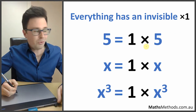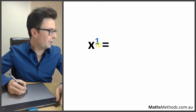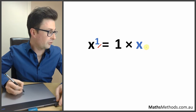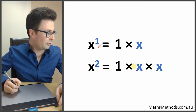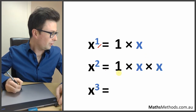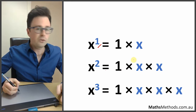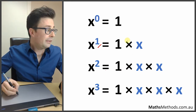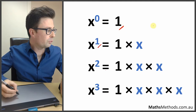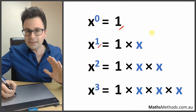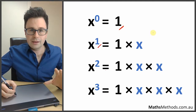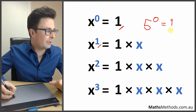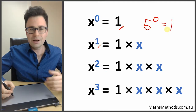This doesn't seem important until you look at these powers. x to the power of 1 is just 1 times x, showing there's only 1 x. x squared shows 2 x's, and x cubed shows 3. So what happens when it's x to the power of 0? Well, there are no x's there, so it just equals 1. This works whatever letter or number is used — 5 to the power of 0 also equals 1.